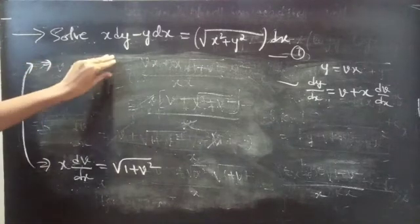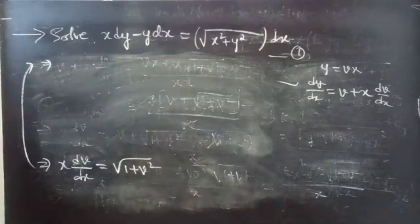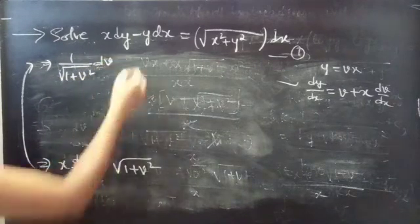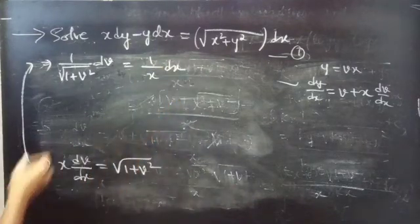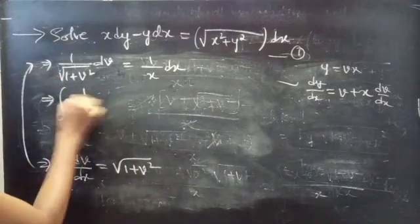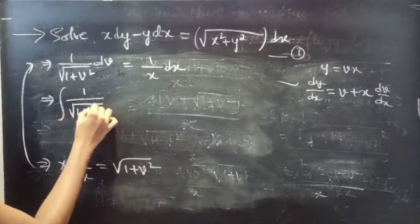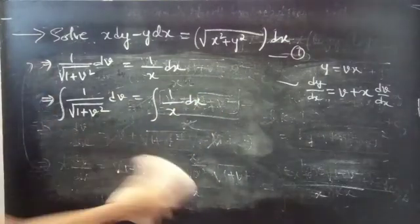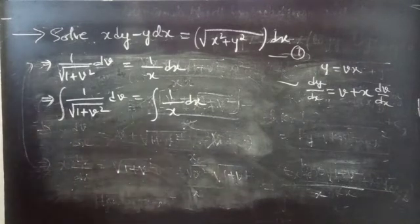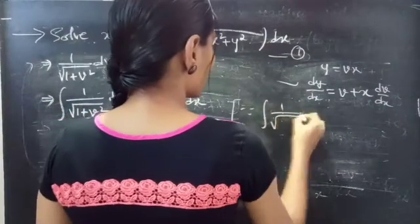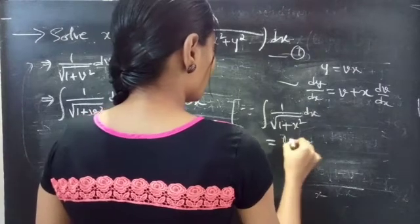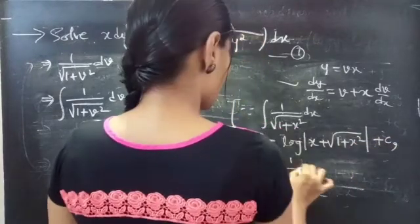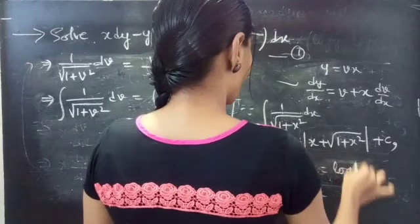We will write functions of v and dv on one side and functions of x and dx on the other side. We get 1 over square root of 1 plus v square, dv equals to 1 over x, dx. The variables are separable, so we integrate both sides: integral of 1 over square root of 1 plus v square dv equals integral of 1 over x dx.